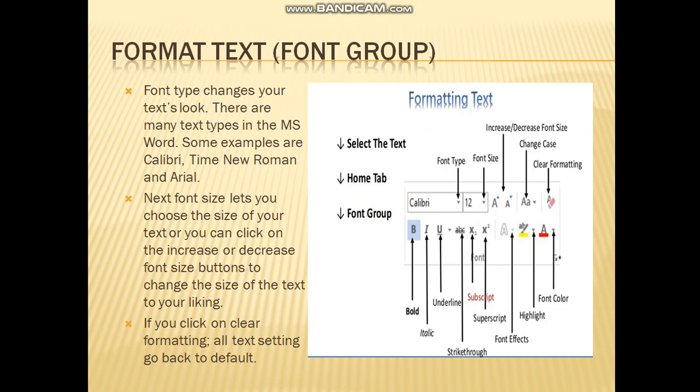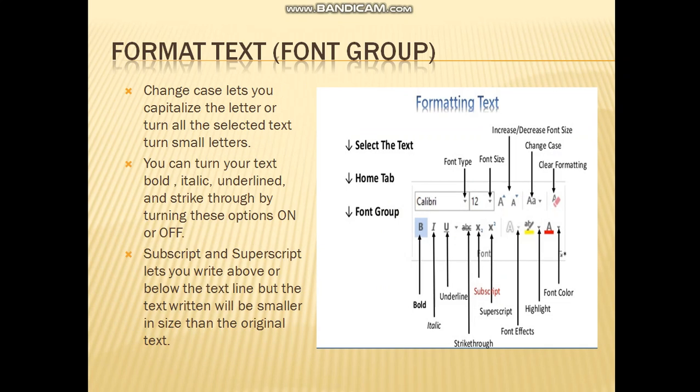Next is font size. It will let you choose the size of your text. You can click on the font size button and a drop-down menu will open, and you will choose the size which suits you better. Next, at the end of the first line, you will see a clear formatting button. If you click on clear formatting, all the text settings will go back to default and it will come back as it was originally.